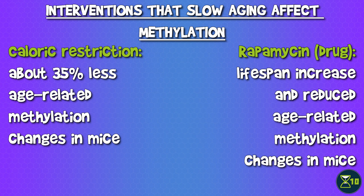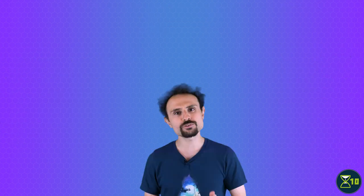Likewise, the drug rapamycin increases lifespan, and it also prevented some of the methylation changes in aging mice. Of course, this might just be a consequence of these treatments' effects on aging more generally.